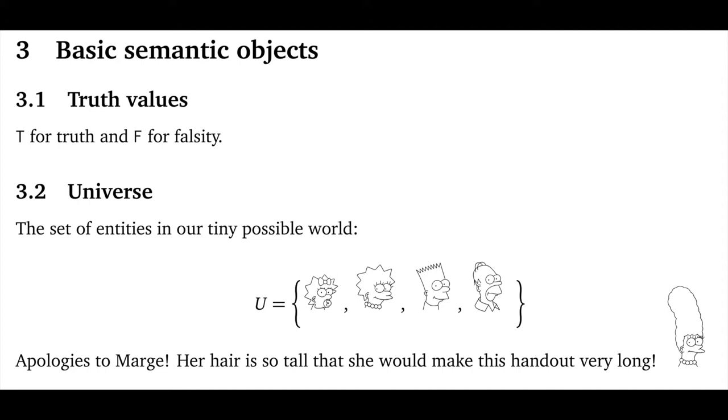So in section three here we introduce the basic semantic objects. These are our building blocks for all the lexical meanings that we'll develop. First we have the two truth values, T for true and F for false.